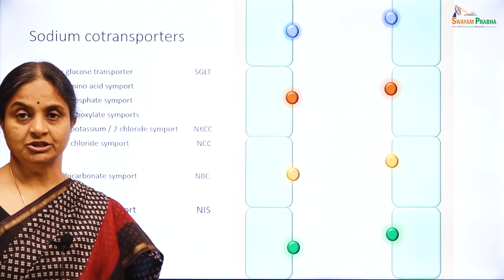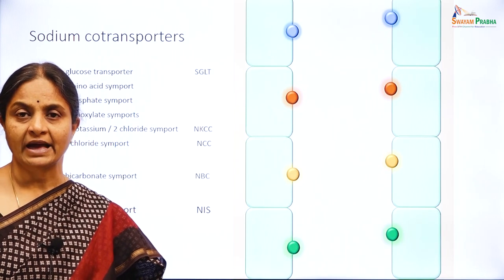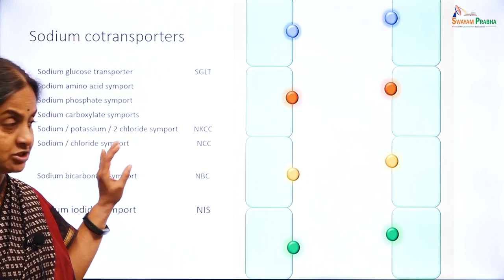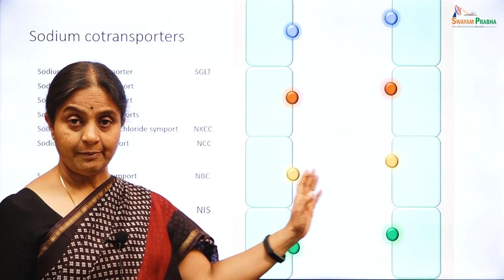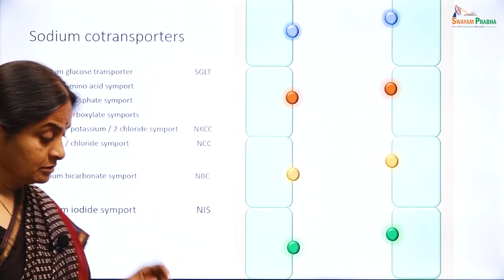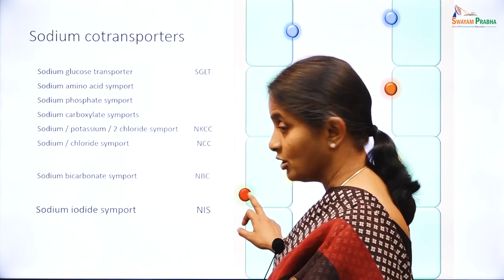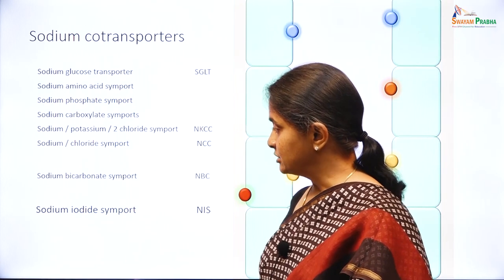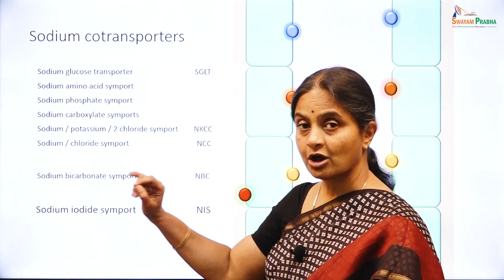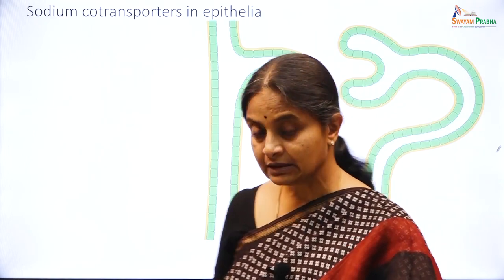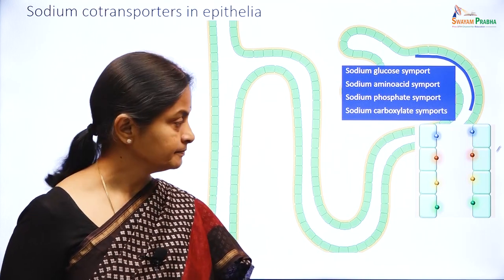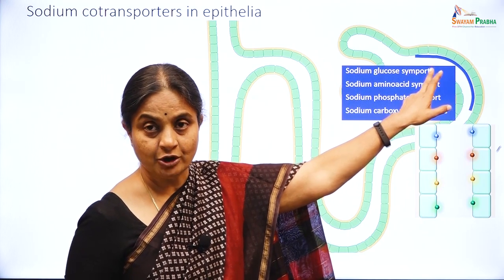We will now consider sodium co-transporters — an overview first, then specific information about each. All these sodium co-transporters are found in the renal epithelia, all on the luminal border, with the exception of the sodium bicarbonate symport which is found on the basolateral border. The sodium iodide symport is found in the thyroid gland. On the luminal border of the proximal convoluted tubule is the sodium glucose symport or SGLT.